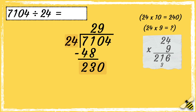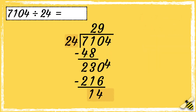Now I need to find out what's left over: 230 take away 216 is 14. We can now bring the next digit down. Finally, we can work out how many 24s go into 144.